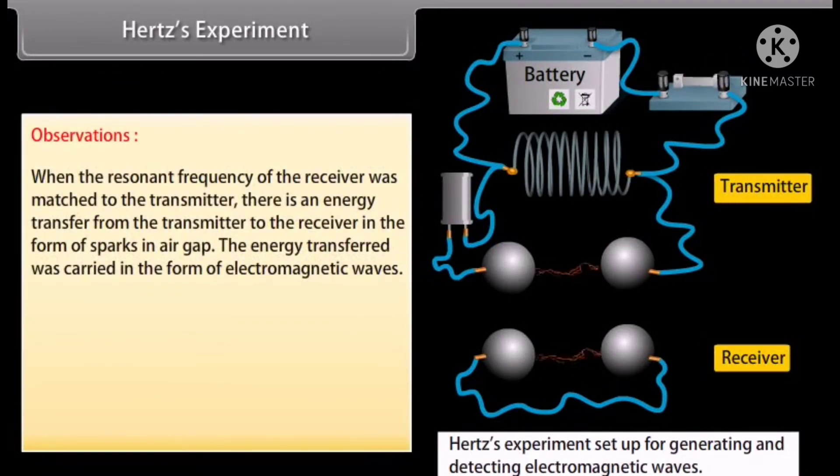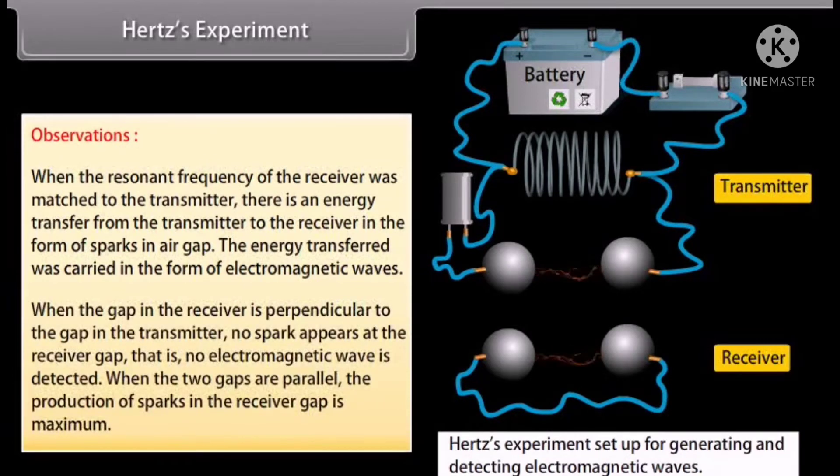Observations: When the resonant frequency of the receiver was matched to the transmitter, there is an energy transfer from the transmitter to the receiver in the form of sparks in air gap. The energy transferred was carried in the form of electromagnetic waves. When the gap in the receiver is perpendicular to the gap in the transmitter, no spark appears at the receiver gap. That is, no electromagnetic wave is detected. When the two gaps are parallel, the production of sparks in the receiver gap is maximum.